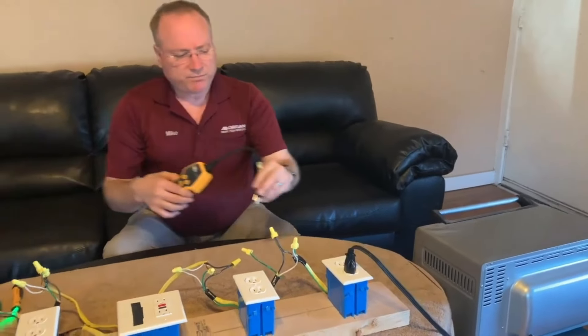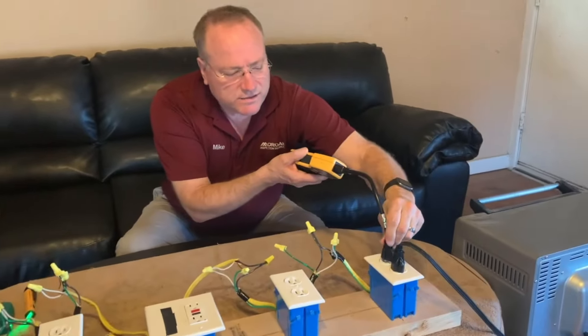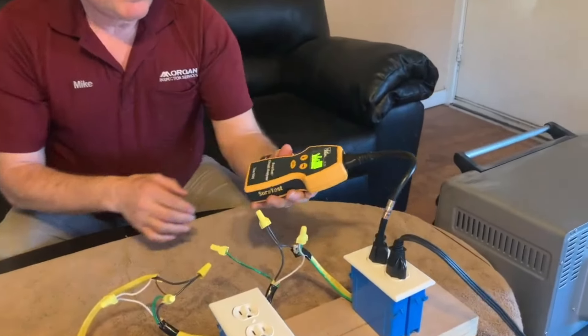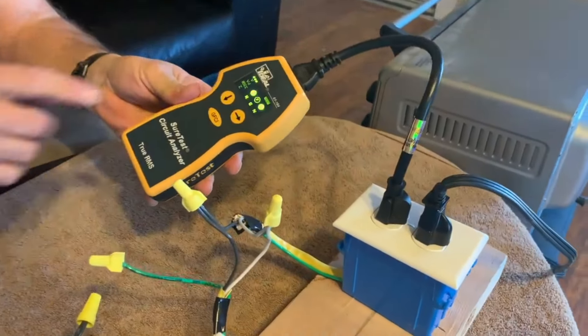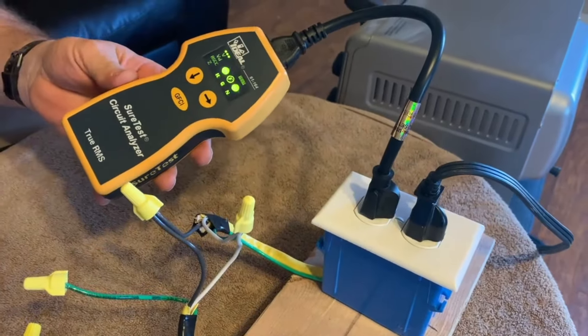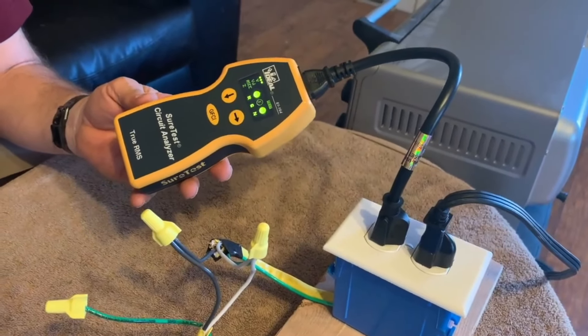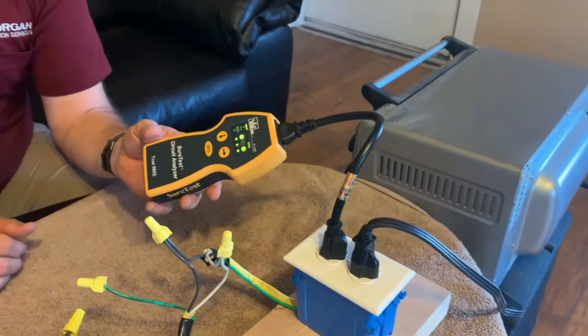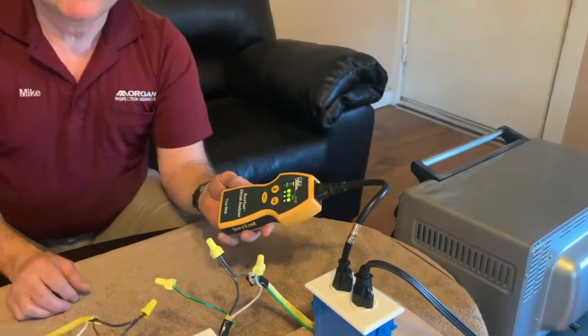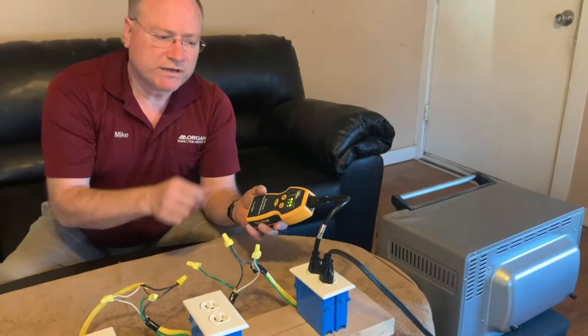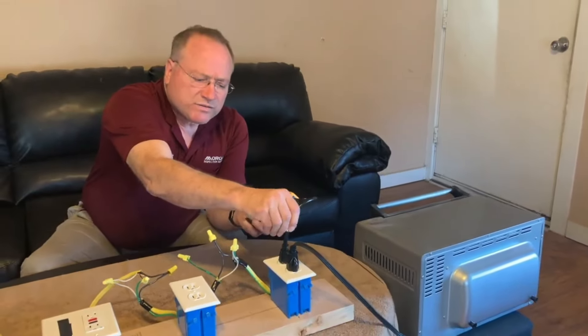So if I plug in my SureTest circuit analyzer into this same electrical outlet, you'll see this F flashing. That flashing F indicates that it's a false ground. So this circuit analyzer does pick up the fact that this outlet does have a bootleg ground. But let me show you why these are so dangerous.